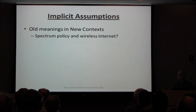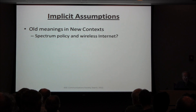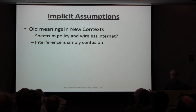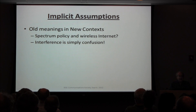We still talk about spectrum policy as if that makes sense — it's a conversation that should have died half a century ago. Yet we still try to allocate these tracks in the sky. There's a wireless internet, and it's treated as different from the wired internet. Interference is simply confusion — it's not a property of the electrons. If everyone in this room wore blue shirts, I couldn't tell you apart, but you're all in the same frequency. Making that the basis of policy is silly.